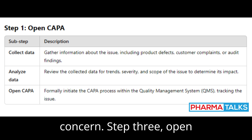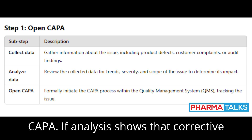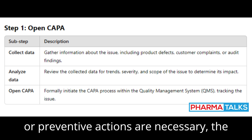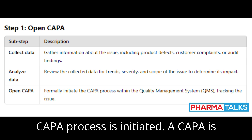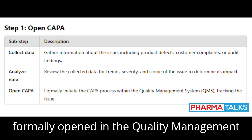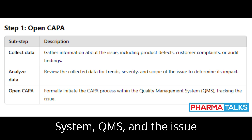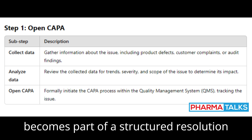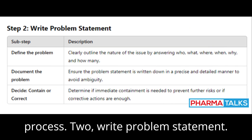Step 3: Open CAPA. If analysis shows that corrective or preventive actions are necessary, the CAPA process is initiated. A CAPA is formally opened in the Quality Management System (QMS), and the issue becomes part of a structured resolution process.